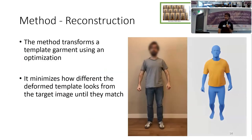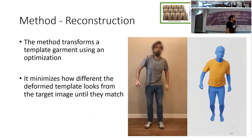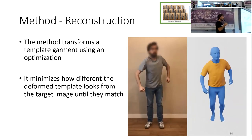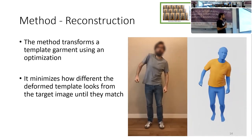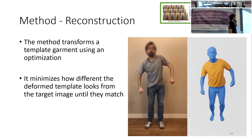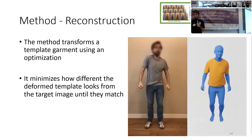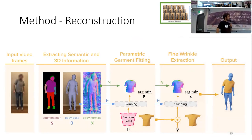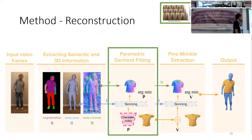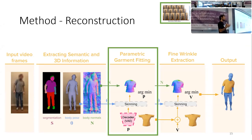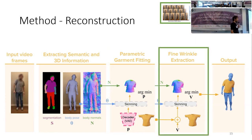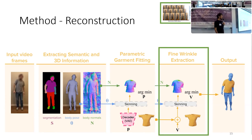Let's see how the first part works. The method transforms a template garment using an optimization. We start with a template garment, and over time the optimizer modifies it little by little until it matches the look of the garment in the video — you can see how the wrinkles match the real ones. The first half of the iterations gets a coarse matching of the target, and in the second half we give the optimizer more freedom so it can match high-frequency details.